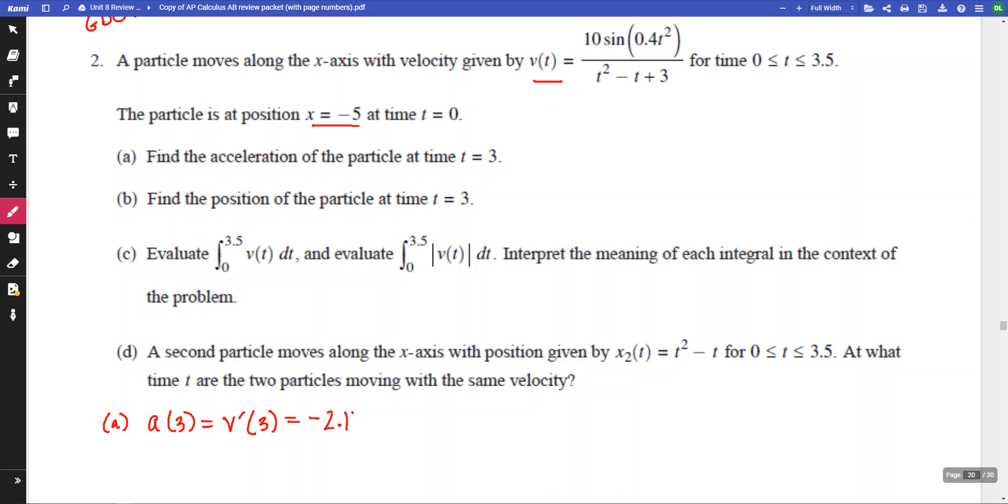So negative 2.118. And let's go ahead and use our units. Does it give us units here? Any units provided? No units. Okay. Well, if we have no units, then we don't use units. So negative 2.118.